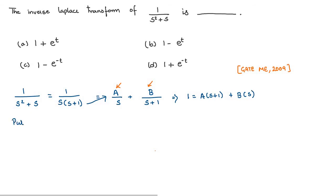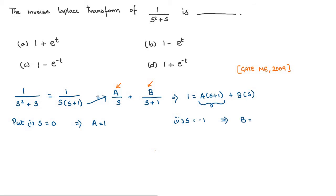To find the values of A and B, first put s = 0 so that the B term becomes 0. We get A = 1. Now put s = −1 so that the A term becomes 0. Then we get the value of B = −1. Putting the values of A and B back in the equation, we get 1/s minus 1/(s+1).